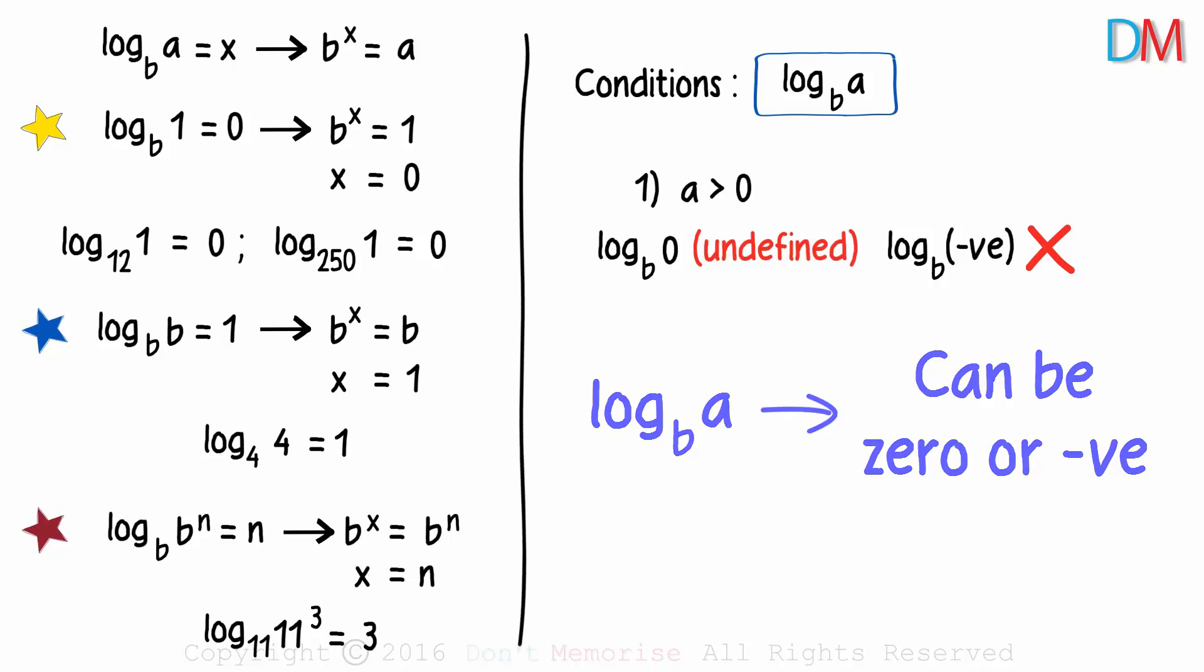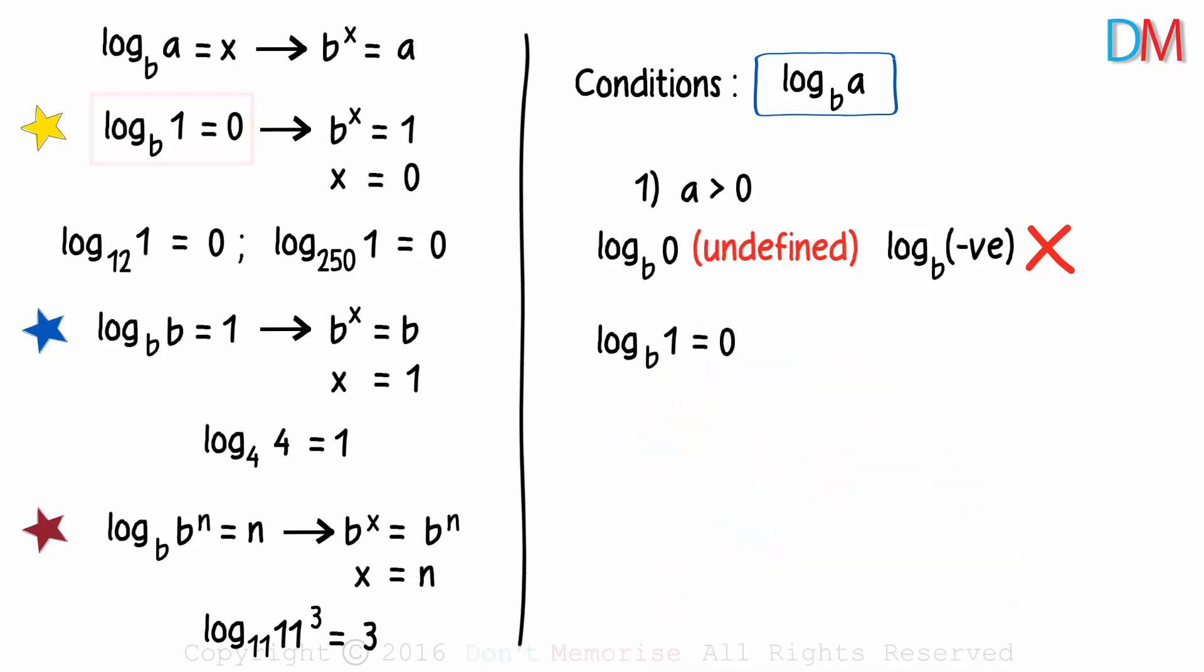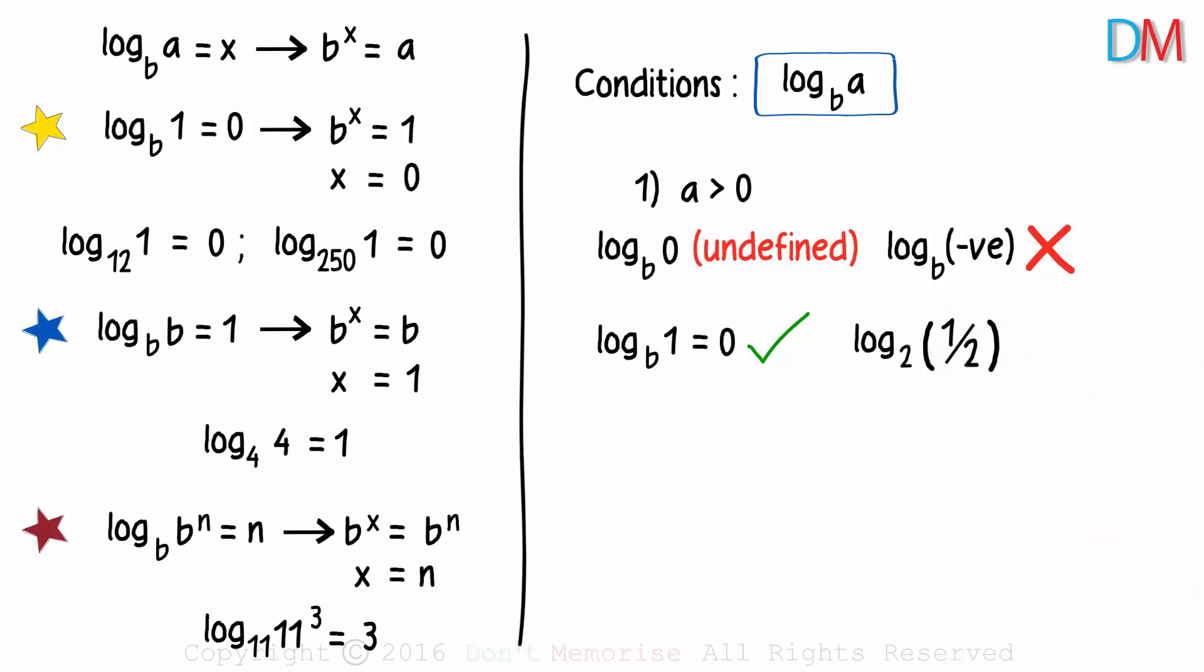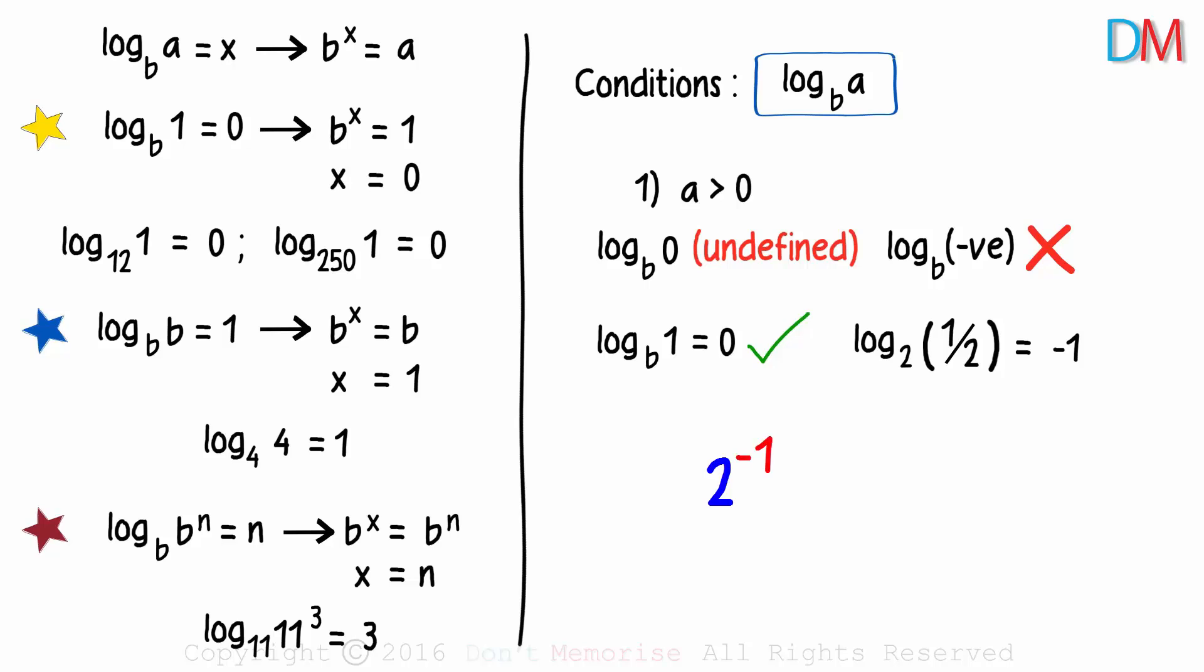For example, as we saw here, the log of one to the base b will be zero. This is correct. And what will be log of one half to the base two? It will equal negative one as two raised to negative one is equal to one over two or zero point five. This is also correct. The answer can be zero or negative. But the argument has to be greater than zero.